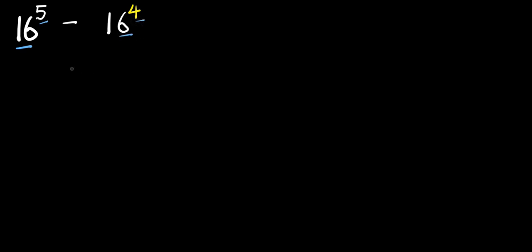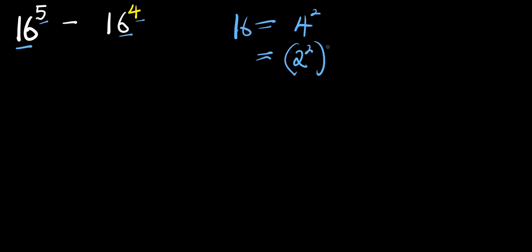Now remember, 16 is simply 4 to the power of 2. And 4 itself is a perfect square, which is 2 to the power of 2, and this is raised to the power of 2. So if you multiply the exponents, you have 16 is equal to 2 to the power of 4.